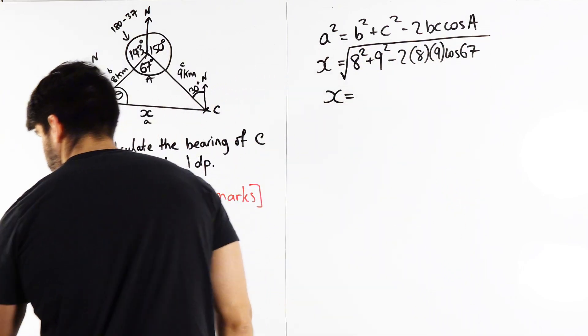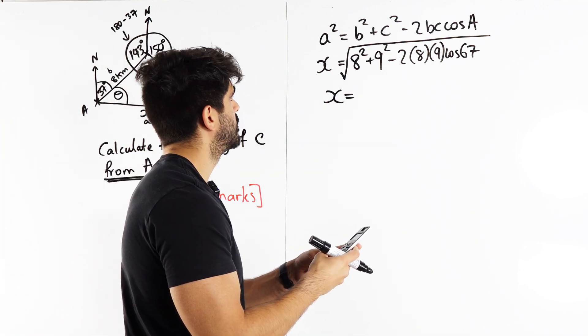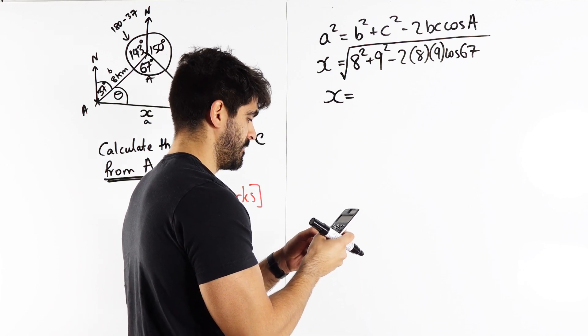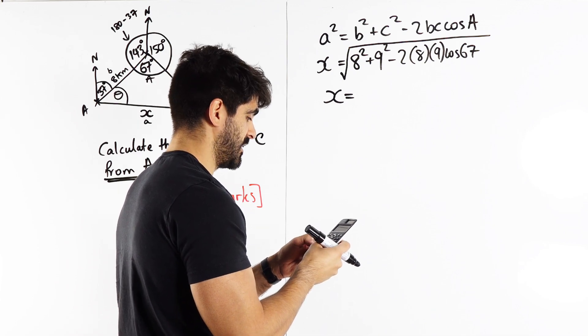Especially my GCSE students on my main course. I've conditioned them well to, by default, do this. All right, so I have 8 times 9 times cos of 67.